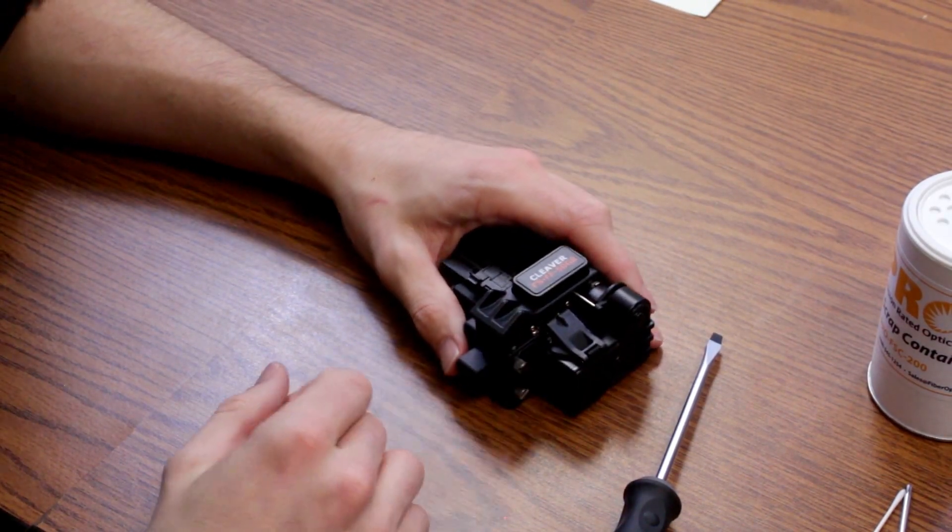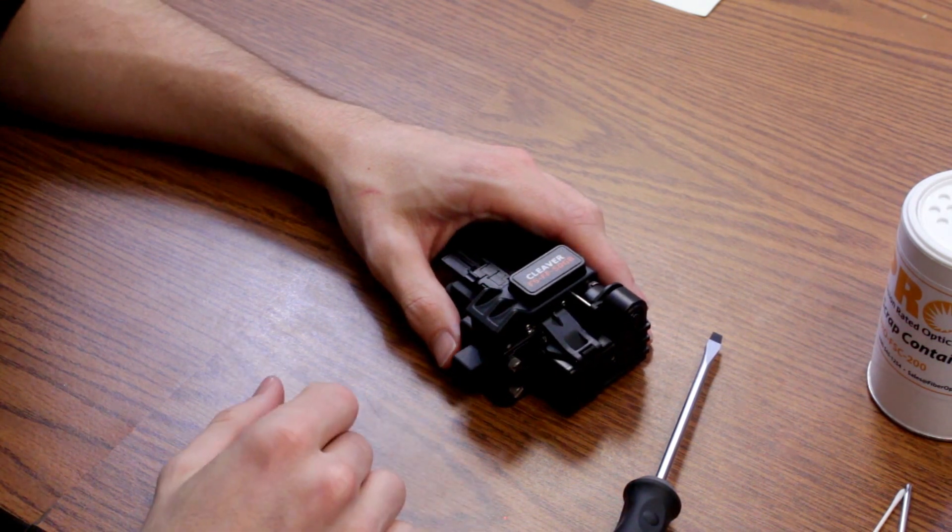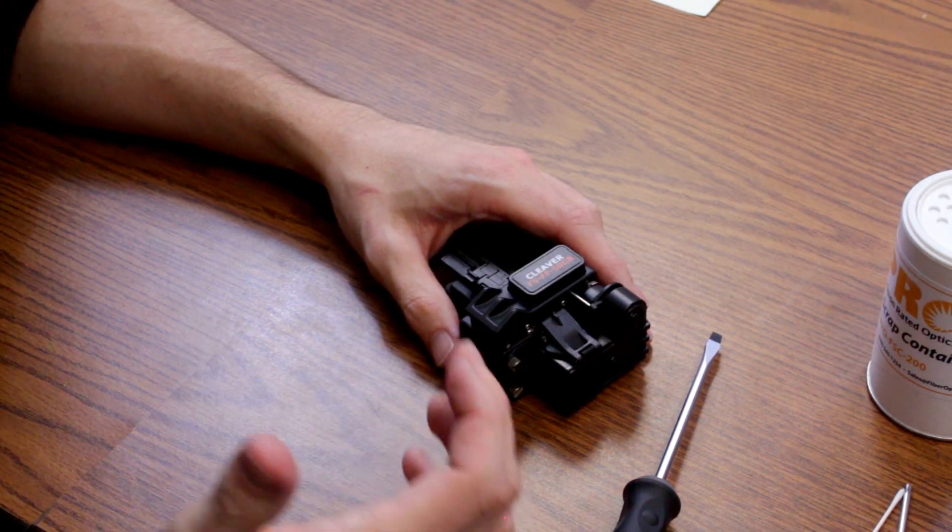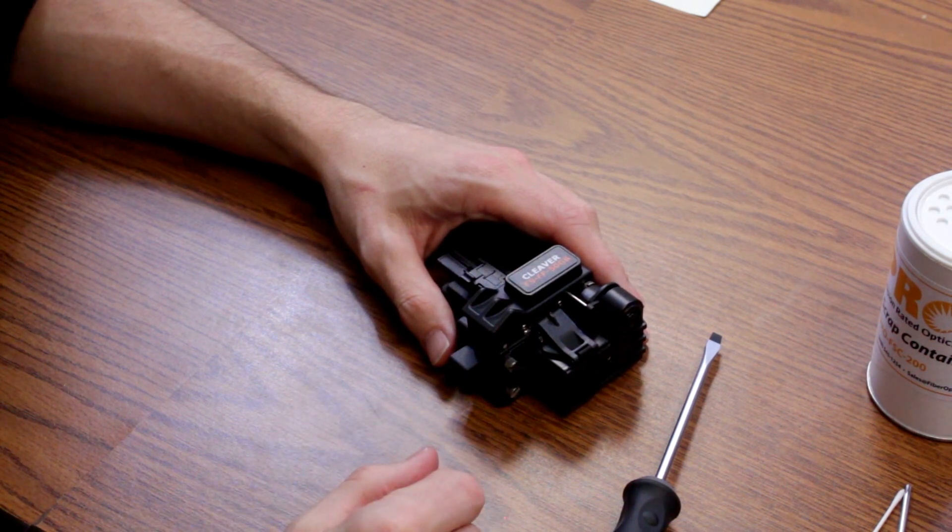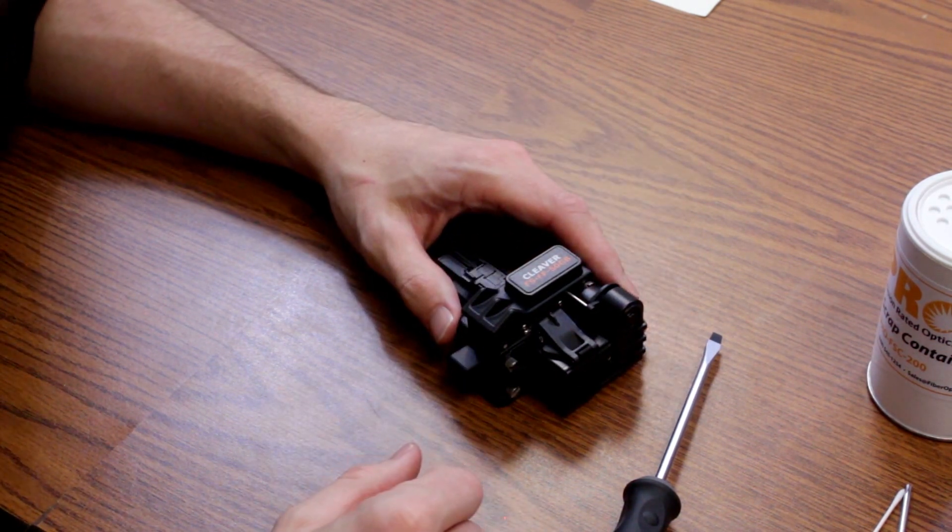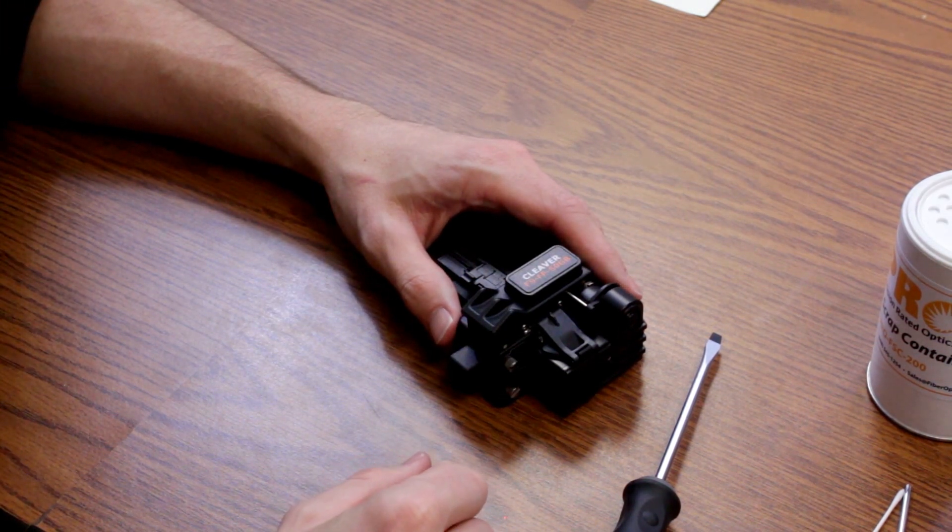Okay, so the next portion of taking care of your cleaver is going to be blade rotation. So we figure anywhere between 2,000 and 3,000 cleaves per blade rotation, which would give your life expectancy of a blade to be around 36,000 to 50,000 cleaves.